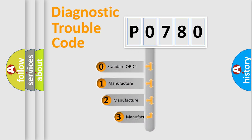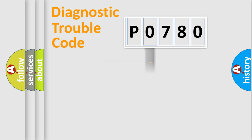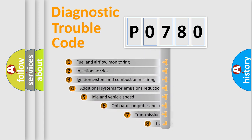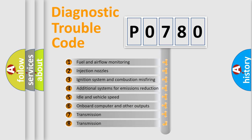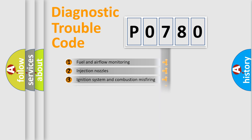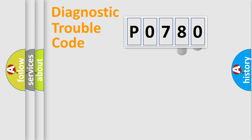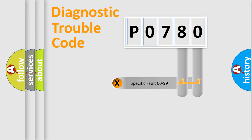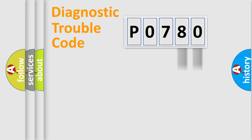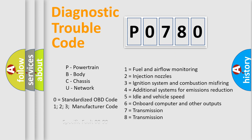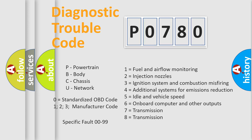If the second character is expressed as zero, it is a standardized error. In the case of numbers 1, 2, or 3, it is a more specific expression of a car-specific error. The third character specifies a subset of errors. This distribution is valid only for the standardized DTC code, and only the last two characters define the specific fault of the group.